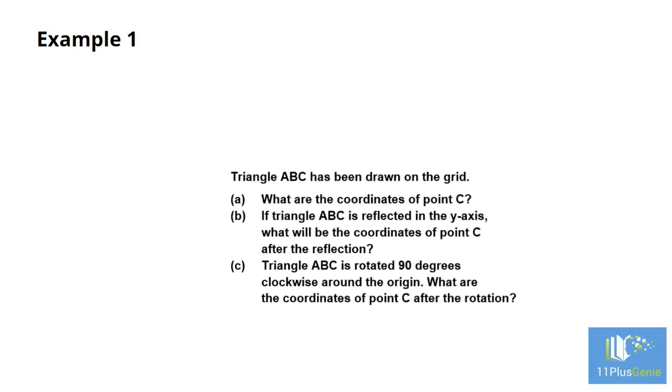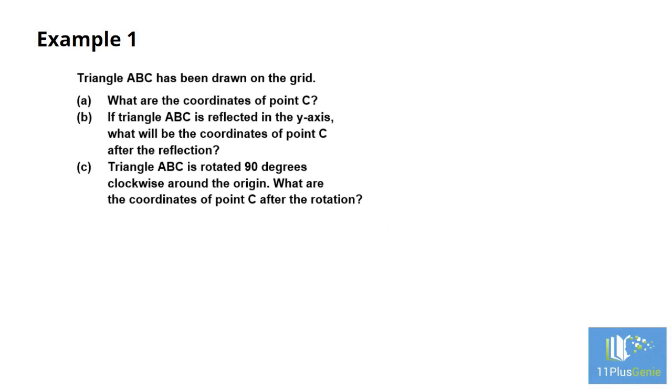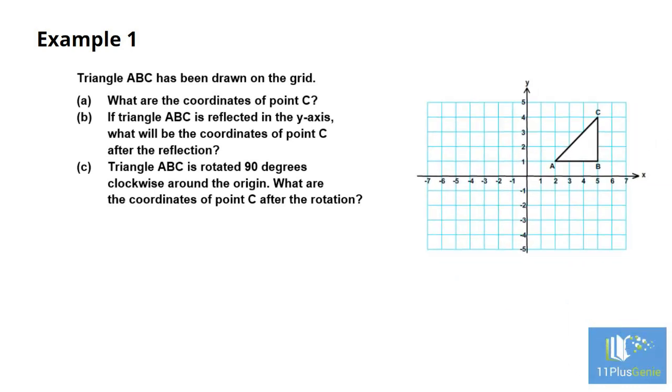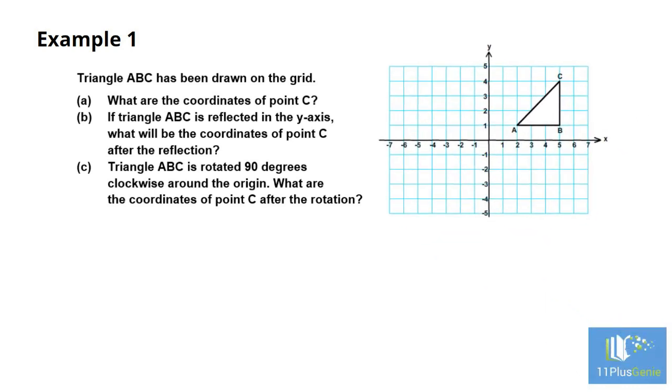Let's look at some examples. Example 1: Triangle ABC has been drawn on the grid. Part A: What are the coordinates of point C? Remember, we always give the X value first and then the Y value. Along the corridor, up the stairs. X is 5 and Y is 4.